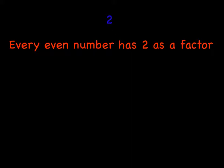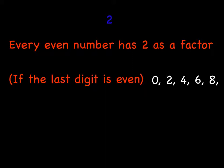Now onto two. Every even number has two as a factor. If the last digit is even, it's the easiest way to think of it. Even if it's a big number, we're just going to focus on that last digit. If it's even, it has two as a factor. So what are even numbers? Zero, two, four, six, and eight.